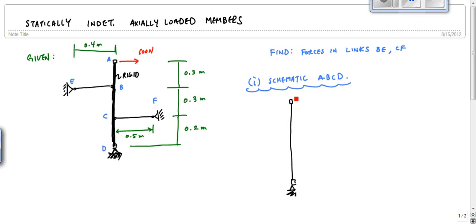At point B, right here, I have to decide whether I'm going to assume BE is in tension or in compression. If I assume BE is in tension, then I'm going to draw it right here like this: N_BE. And here's my 600 newtons. And then if I'm going to assume CF is in tension, I'm going to draw it like this, right here: N_CF.